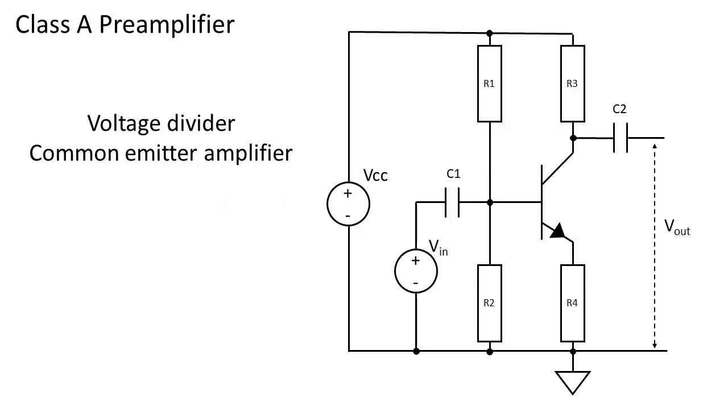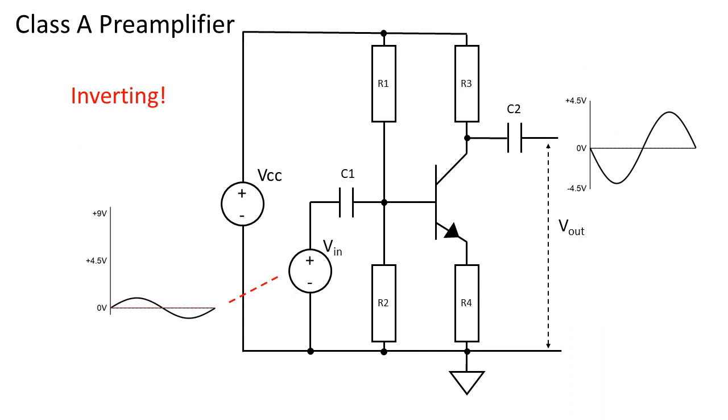The topology we will be using is called the voltage divider common emitter amplifier. This is a very popular topology because it's not very sensitive to the variations in beta of the transistor. The amplifier is also an inverting amplifier which means that the output signal will be out of phase of the input signal.